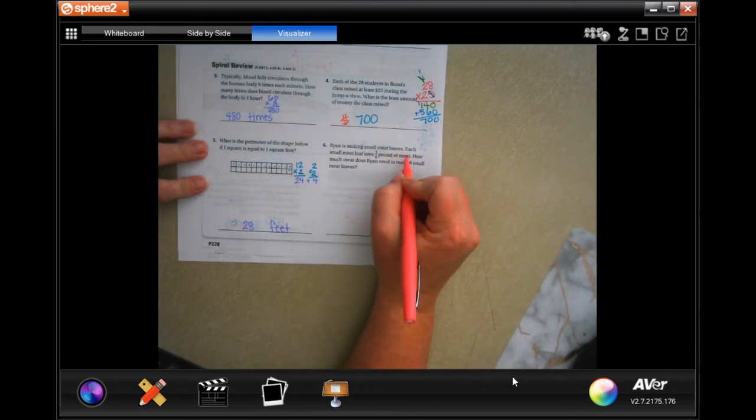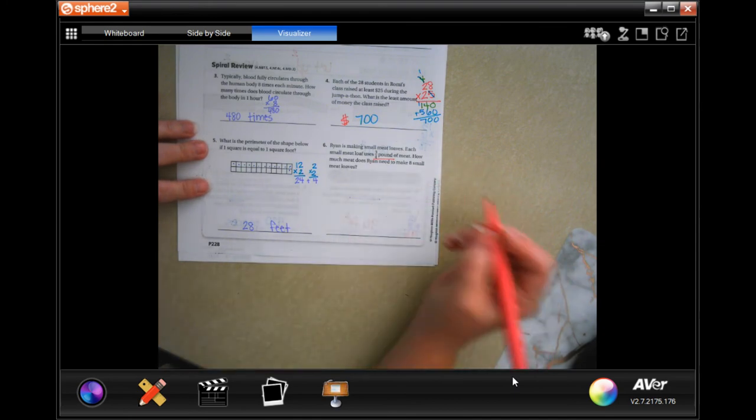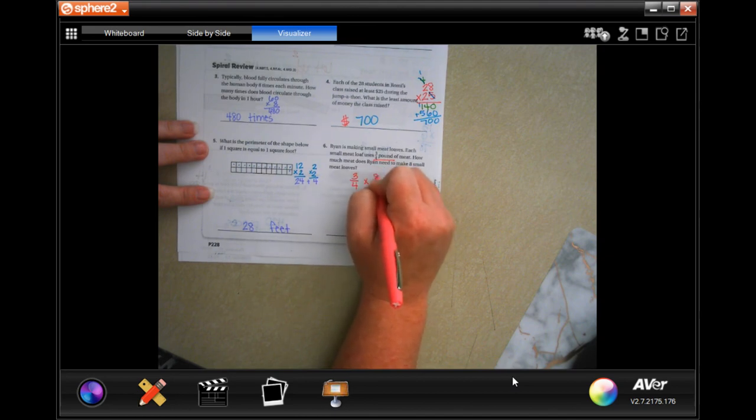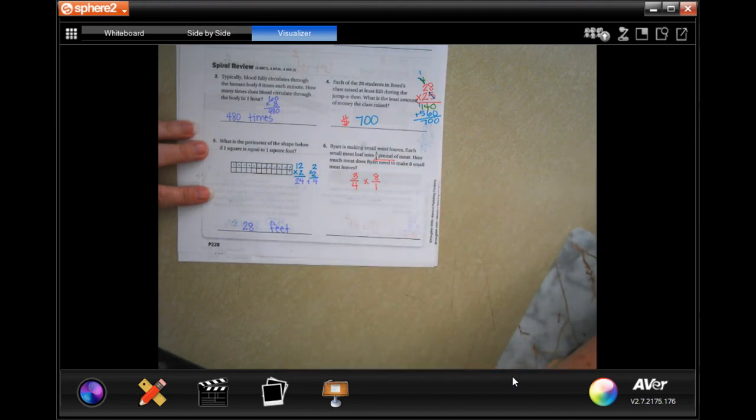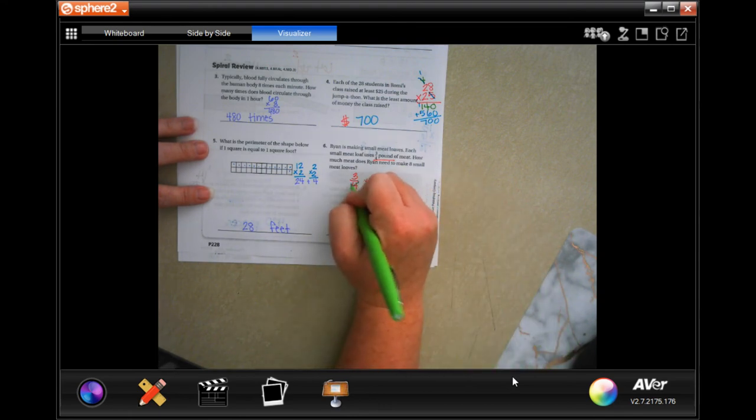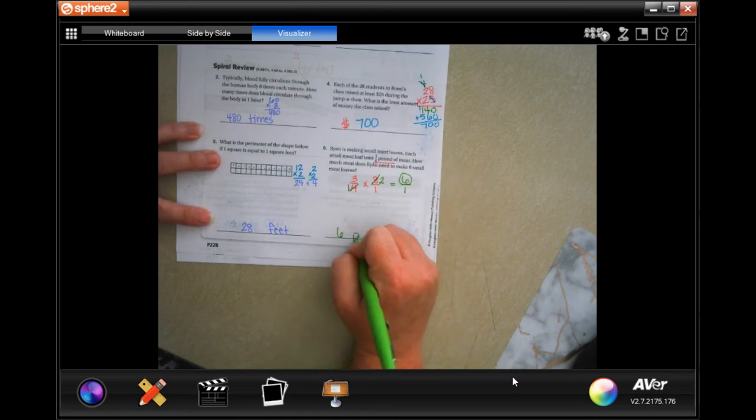Ryan is making small meatloaves. Each meatloaf uses three quarters of a pound of meat. How much meat does Ryan need to make eight small meatloaves? So, three quarters of a pound. And he wants to make eight of those. I'm going to put the eight over a one so that it's a fraction. And then I'm going to cross cancel. So, four goes into four once. Four goes into eight twice. And it looks like I can just go ahead and multiply now. So, three times two is six. One times one is one. Six pounds. Done.